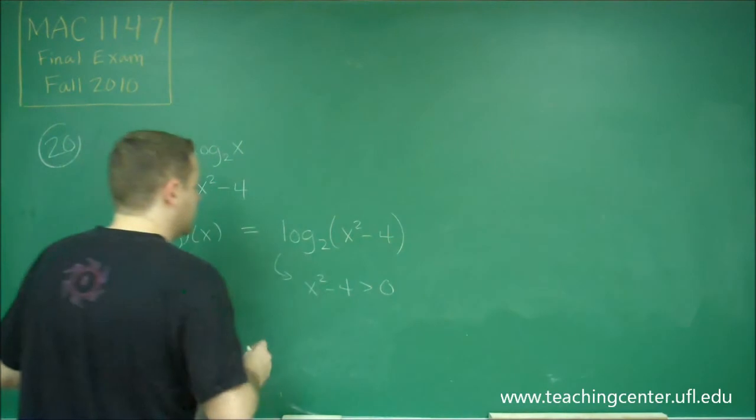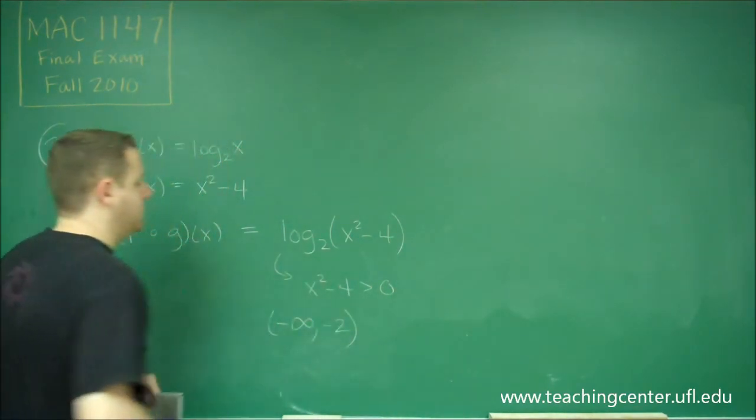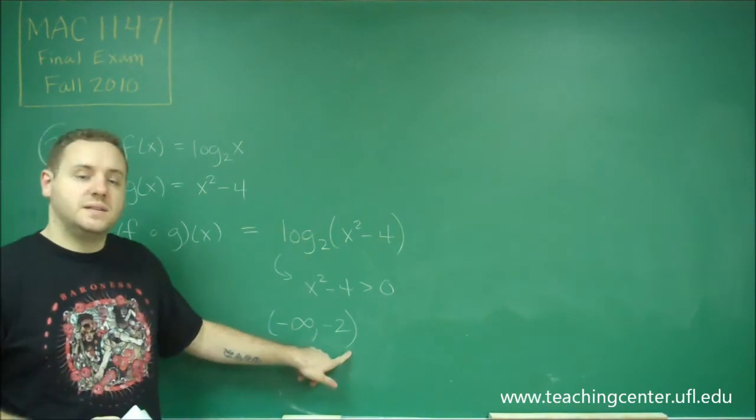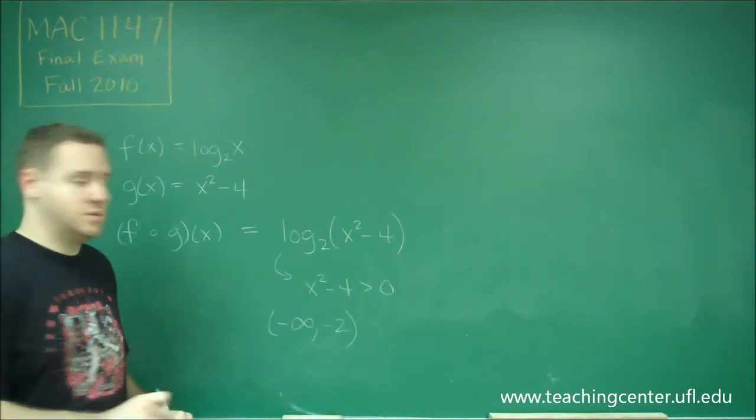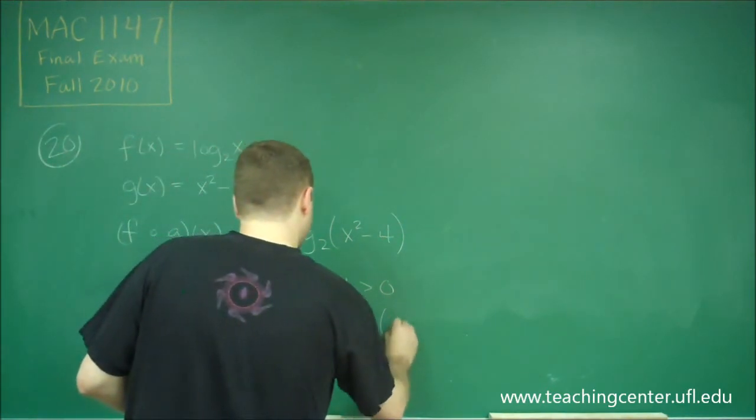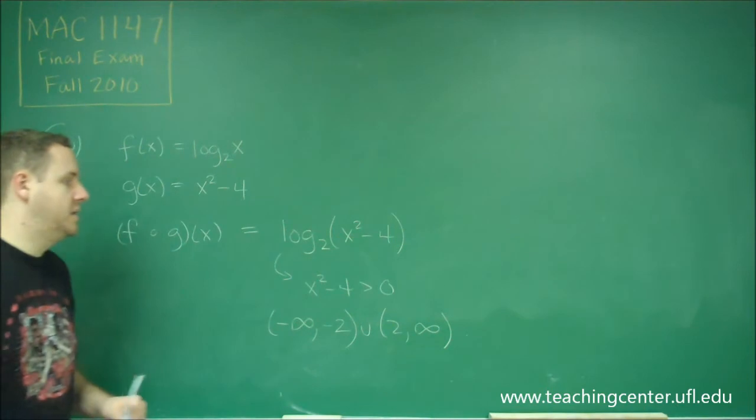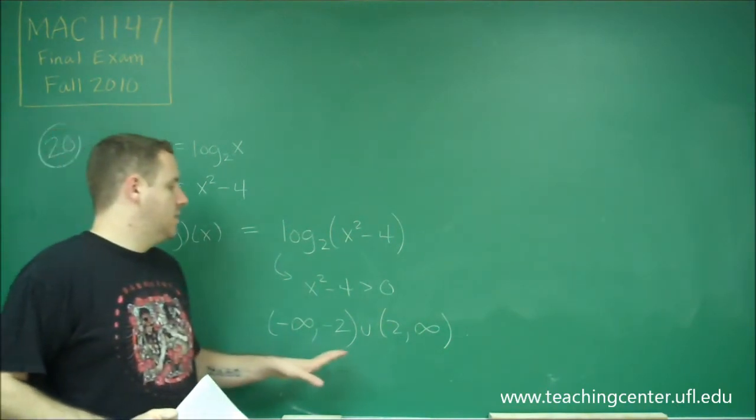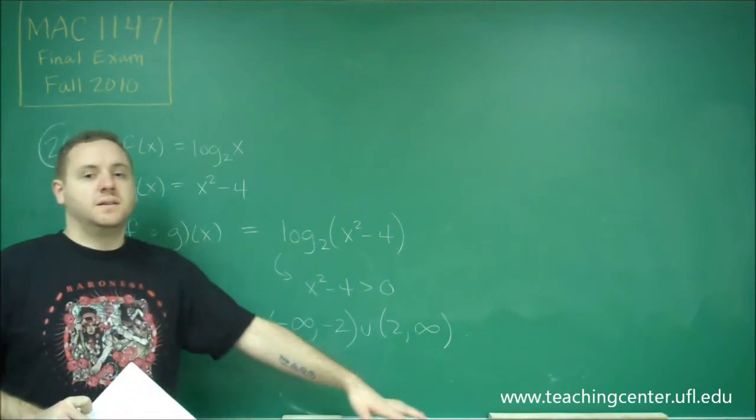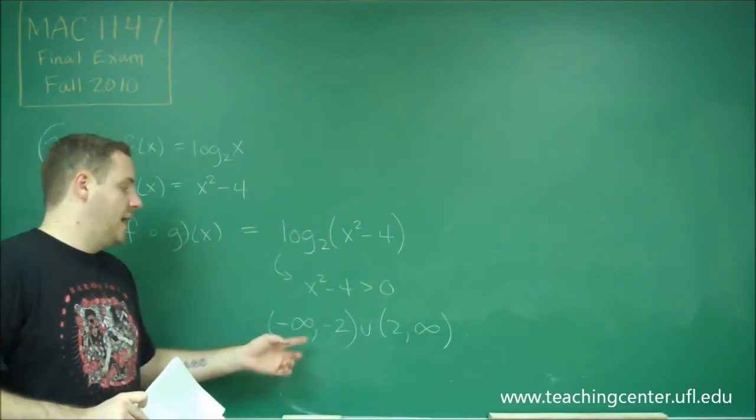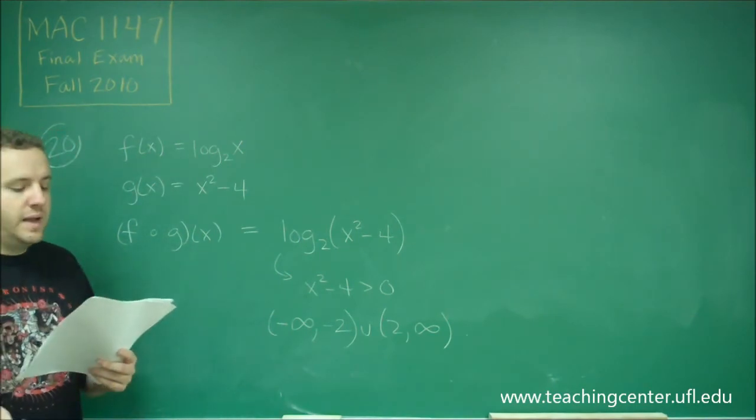So our domain here is going to be anything from negative infinity up to negative 2, but we're going to have a parenthesis because we can't use 2 and negative 2 because those would give us exactly 0, which doesn't work. Union 2 to infinity. So anything that is not in the interval of negative 2 to 2, and we can't use the points negative 2 or 2 themselves. So that would be answer choice E.